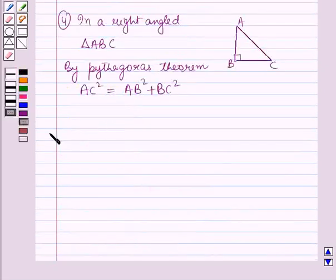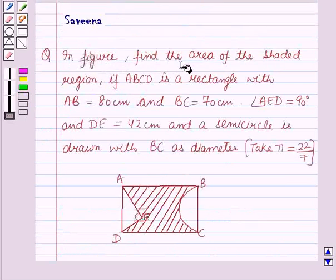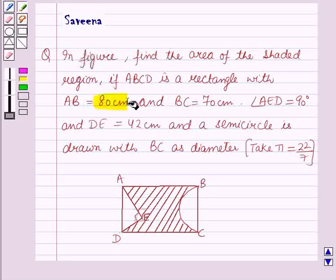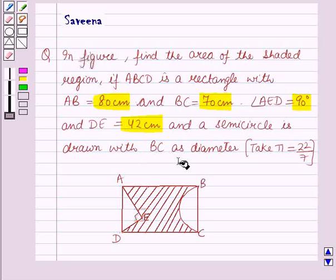In the solution, we have to find the area of the shaded region. Given: ABCD is a rectangle with AB equal to 80 cm, BC equal to 70 cm, angle AED equal to 90 degrees, and DE equal to 42 cm. Also, a semicircle is drawn with BC as the diameter.